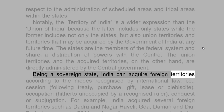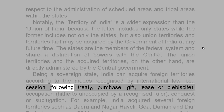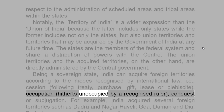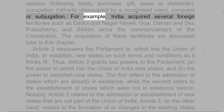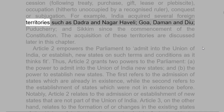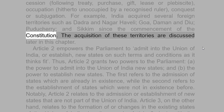The Union Territories and the acquired territories, on the other hand, are directly administered by the central government. Being a sovereign state, India can acquire foreign territories according to the modes recognized by international law, i.e., cession following treaty, purchase, gift, lease or plebiscite, occupation of territory hitherto unoccupied by a recognized ruler, or conquest or subjugation. For example, India acquired several foreign territories such as Dadra and Nagar Haveli, Goa, Daman and Diu, Puducherry, and Sikkim since the commencement of the Constitution.